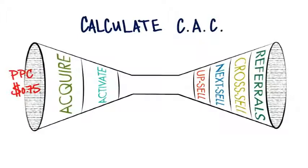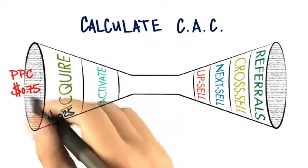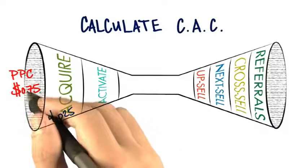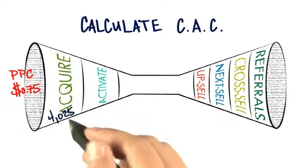Let's assume we're doing a web company and we spend $0.75 on Google AdWords for every click that comes to our website here. Now assume we actually have figured out how to acquire 4,025 customers at $0.75 in this campaign.